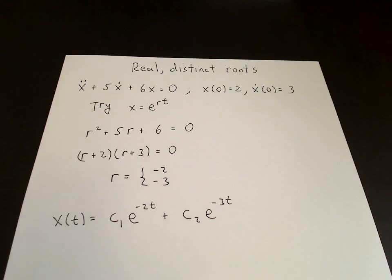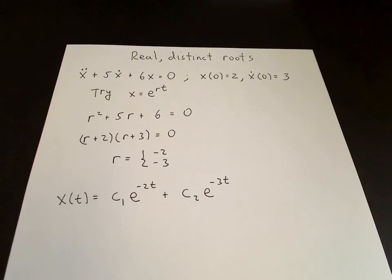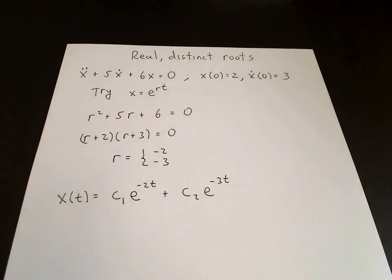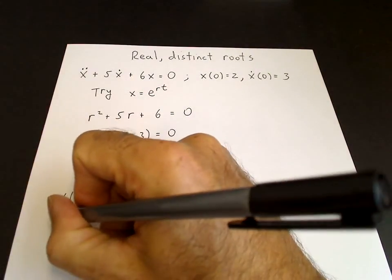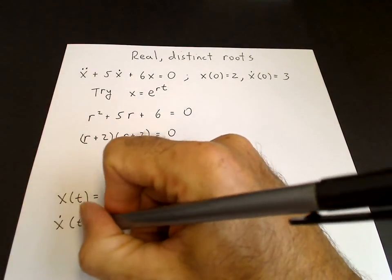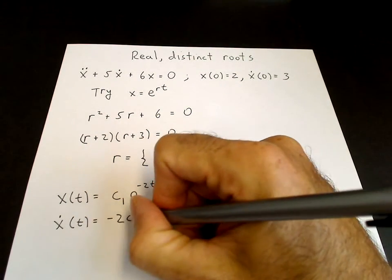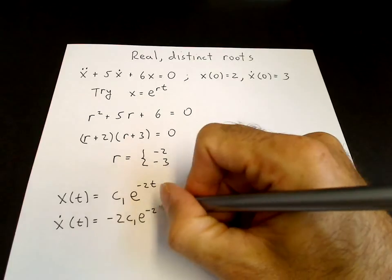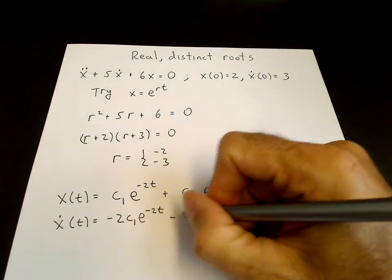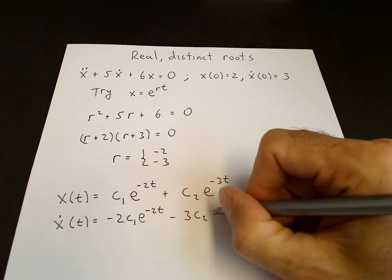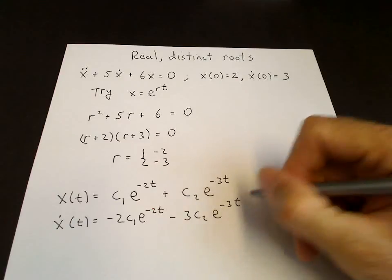Now we use these constants to satisfy the initial conditions, which are at x(0) and at ẋ(0). This is x(t), so it would be useful if we know what ẋ(t) is using the chain rule. We have -2c₁e^(-2t) - 3c₂e^(-3t).